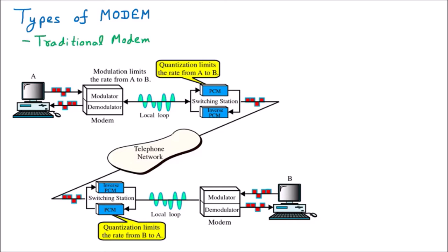As the name signifies, 'traditional' means which was started in the very ancient time. That's why it is called the traditional modem. This modem had the limitation that its upload speed and download speed were very less — the upload speed was 33.6 kbps and the download speed was also 33.6 kbps.